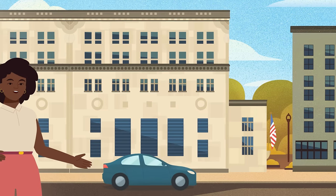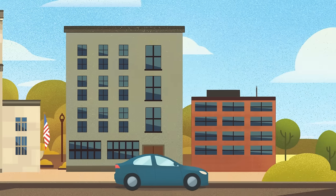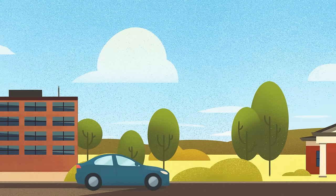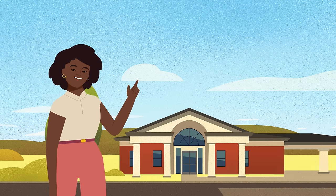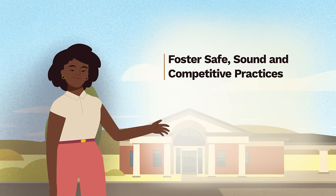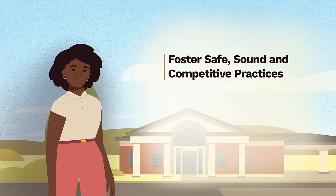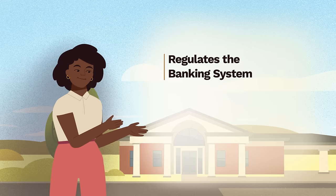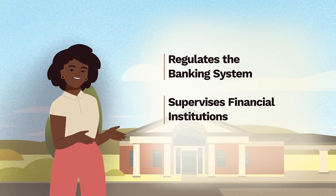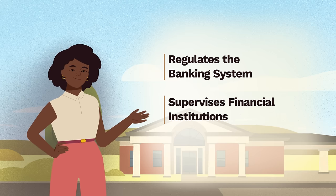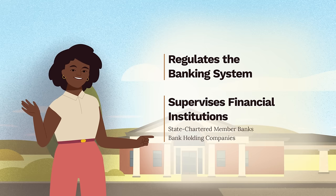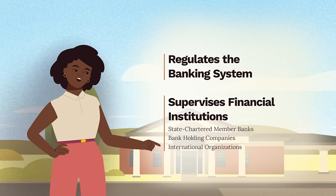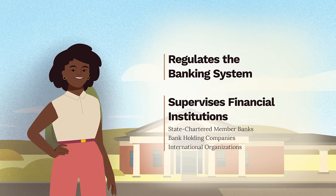Let's tag along with this bank examiner heading out to a commercial bank to see what examiners do. Congress created the Federal Reserve to foster safe, sound, and competitive practices in the nation's banking system. To accomplish this, the Fed both regulates the banking system and supervises certain types of financial institutions — including state chartered member banks, bank holding companies (which are the companies that own banks), and international organizations that do banking business in the United States. There are other types of banks that are supervised by other regulators.